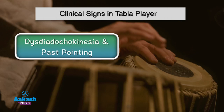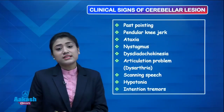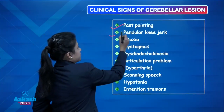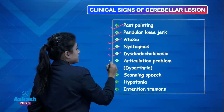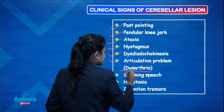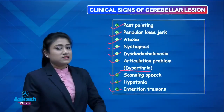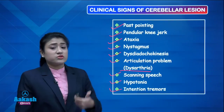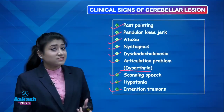To summarize, all clinical signs of cerebellar lesion are: past pointing, pendular knee jerk, ataxia, nystagmus, dysdiadochokinesia, articulation problem which is dysarthria, scanning speech, hypotonia, and intention tremors. These are all clinical signs of cerebellar lesion, which are very important for your final year exam, PG entrance exam, and practicals.